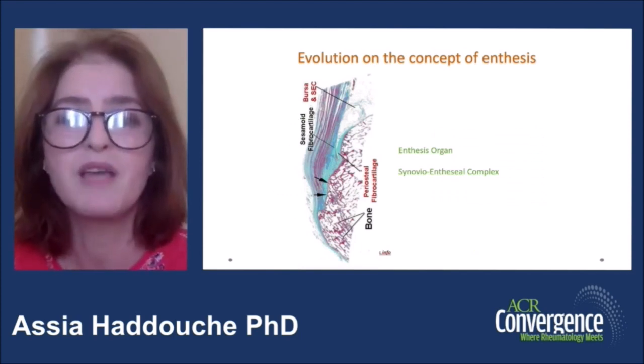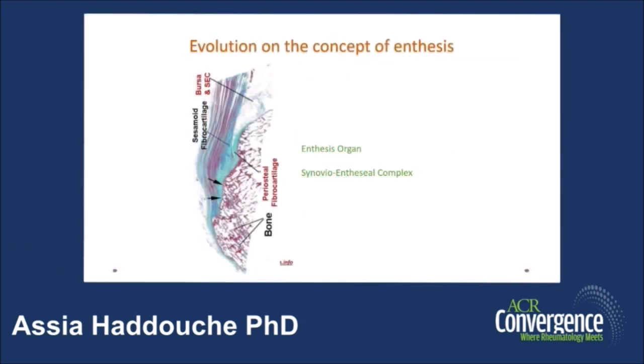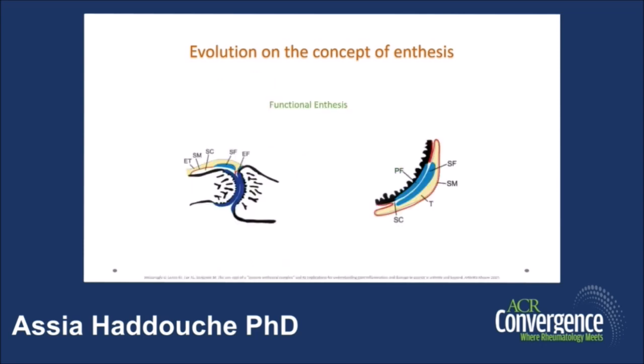Multiple works have shown that the enthesis is more complex than that, and its definition has been extended to the organ made up of the enthesis structure and enthesis, plus all the adjacent structures like bone, fat, bursa, and synovia. Further still, the definition has been extended to functional enthesis, which corresponds to all the sites where the tendon does not even insert into the bone.